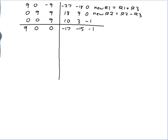My new row 2 is row 2 minus row 3: 0 minus 0 is 0; 9 minus 0 is 9; 9 minus 9 is 0; 18 minus 10 is 8; 9 minus 3 is 6; 0 minus minus 1 is 1. Row 3 is unchanged: 0, 0, 9, 10, 3, negative 1.